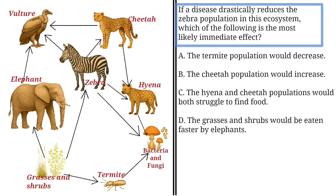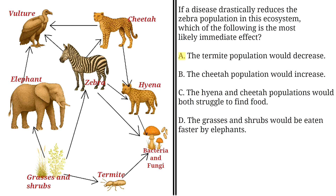If a disease drastically reduces the zebra population in this ecosystem, which of the following is the most likely immediate effect? A: The termite population would decrease. This is incorrect. The termites feed on grasses and shrubs, not zebras. So a reduction in the zebra population would not directly affect termites, as their food source would remain intact.